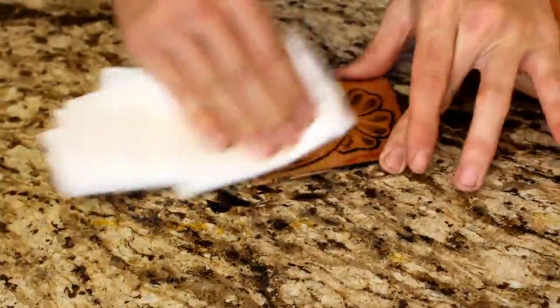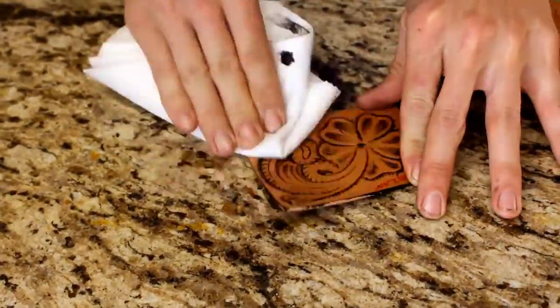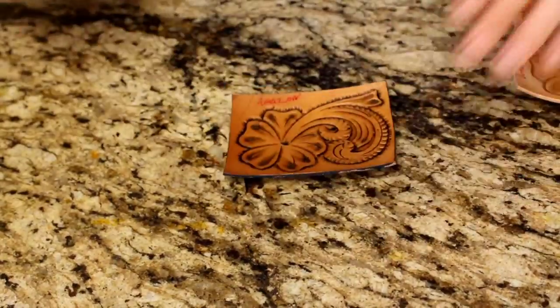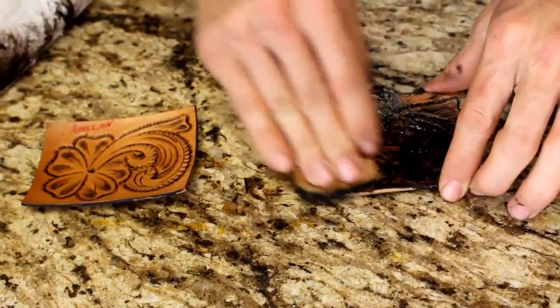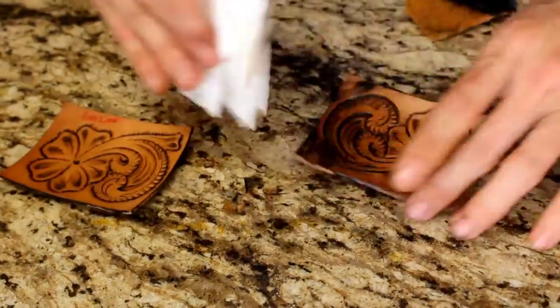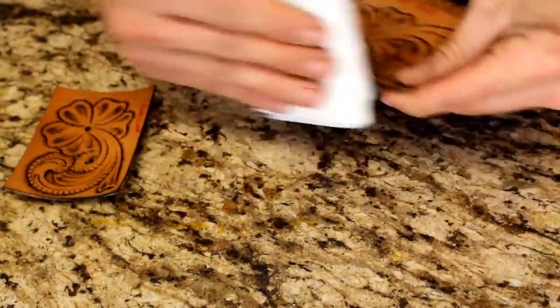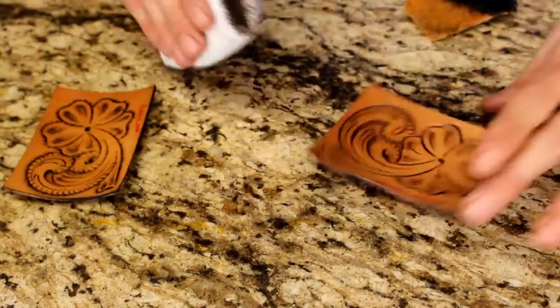Now we're going to rub some antique on them just out of curiosity to see how they come out. Just going to let all that stuff get down in the low spots and wipe it off from the high spots. And I'll kind of add a little contrast to it and we'll be able to tell.